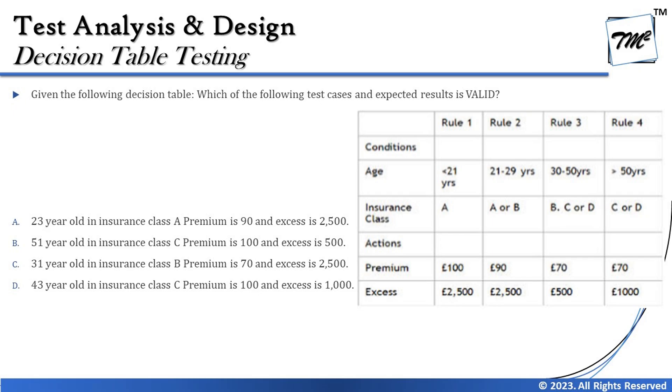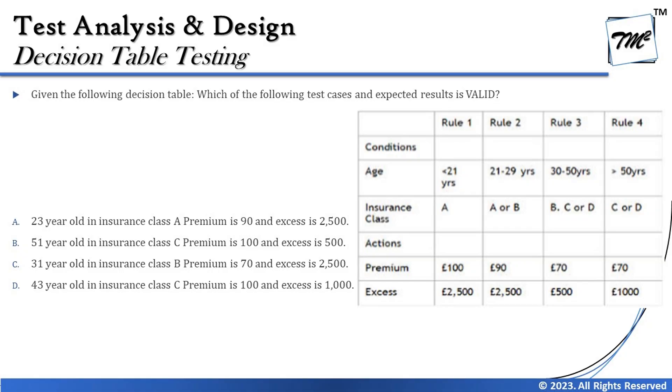In the examination, the table is given to you — apply the statements and get to the answer. Sometimes they may ask about characteristics, like if there are four combinations with two conditions and you already have two, which two are remaining. Just check which of true/true, true/false, false/true, false/false are already covered and pick the others. The next question asks: given the following decision table, which of the test cases and expected results is valid?